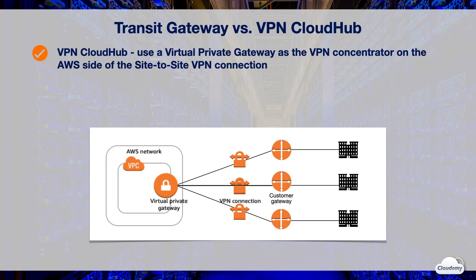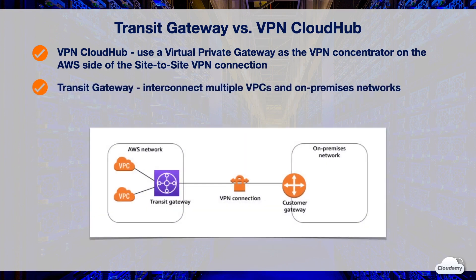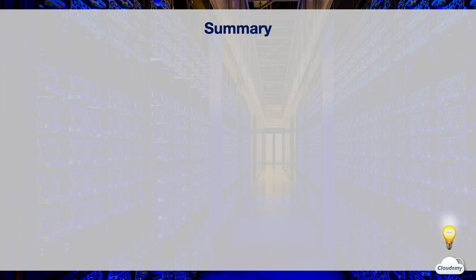A transit gateway is a transit hub that you can use to interconnect multiple VPCs and on-premises networks. It enables you to build transitive connections between multiple VPCs and VPN networks. Transit Gateway also supports inter-region peering, where you can interconnect VPCs in multiple regions and allow them to communicate over the private AWS global network. Transit Gateway is a scalable solution when you want to connect multiple remote sites with multiple VPCs.